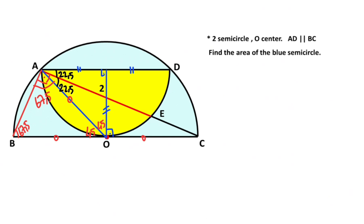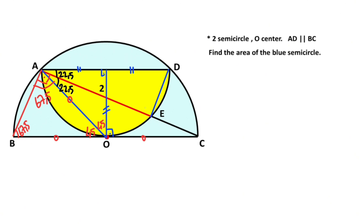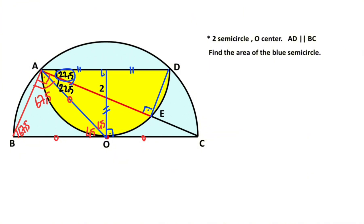Next step: let's connect these two points. Notice that angle AED is opposite the diameter, so here must be equal to 90 degrees. Focusing on this triangle, if here is 22.5 degrees, that means 67.5 degrees are left here.